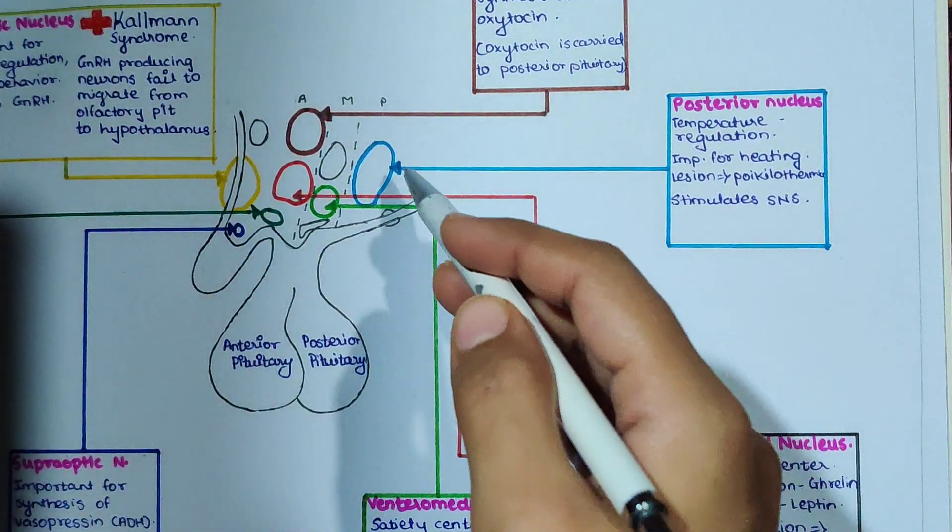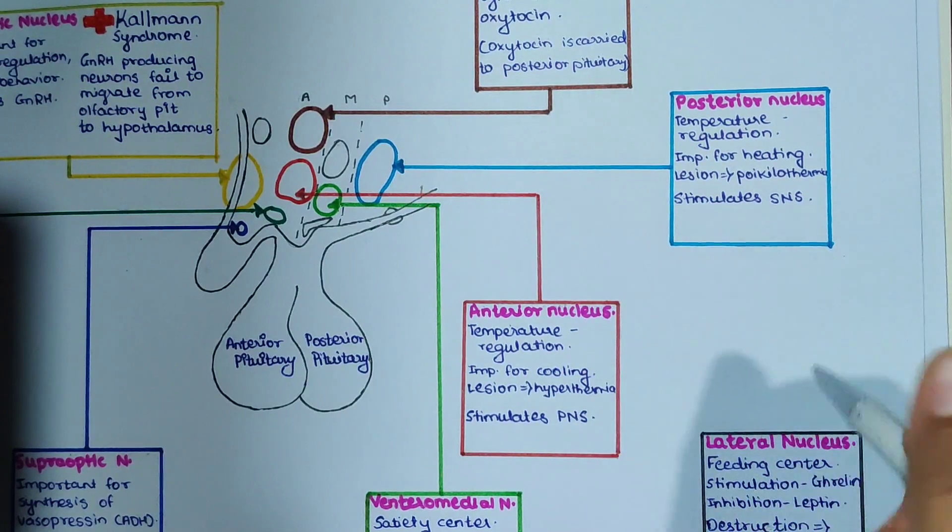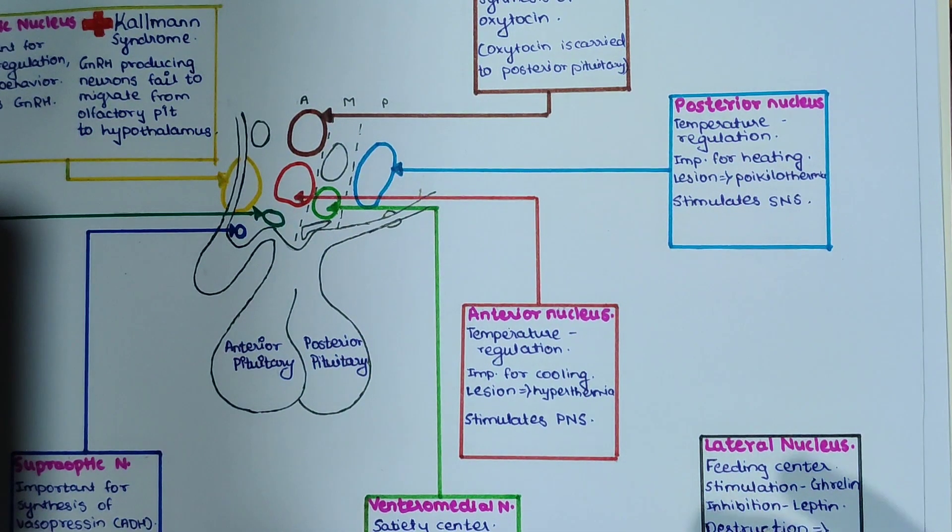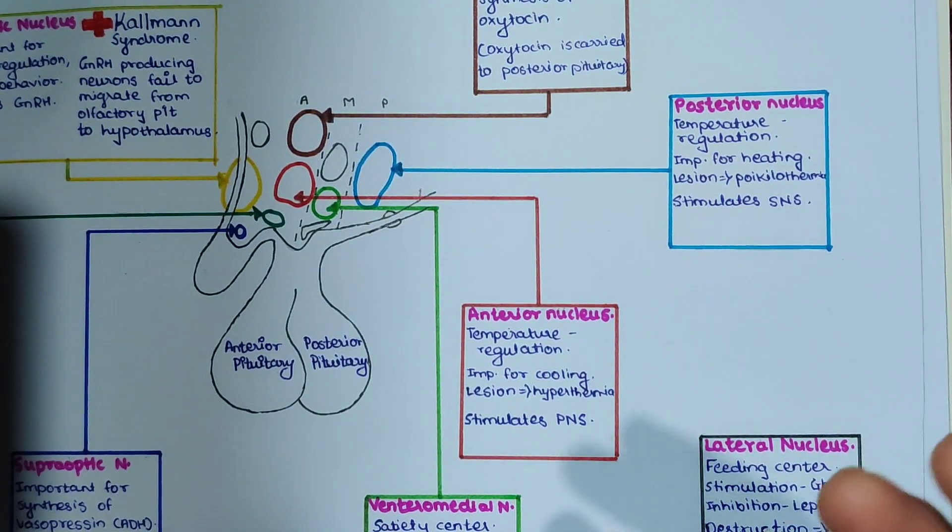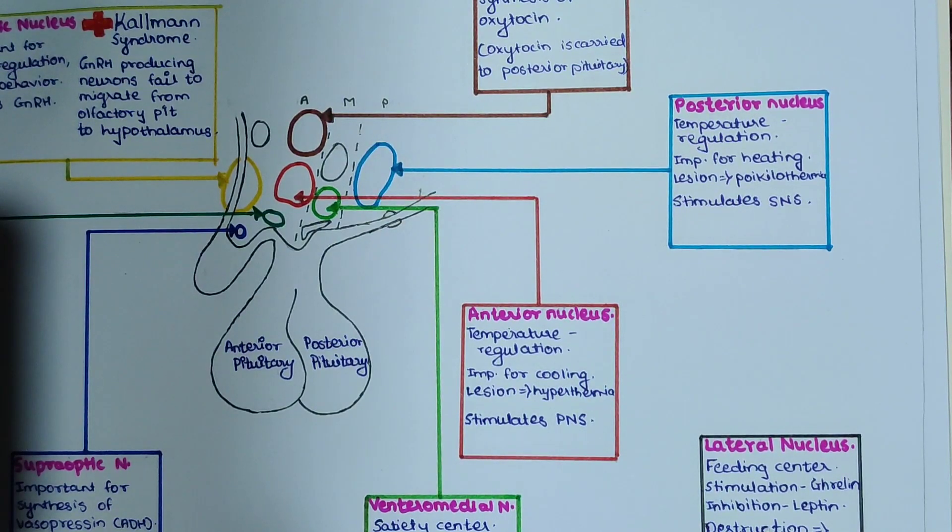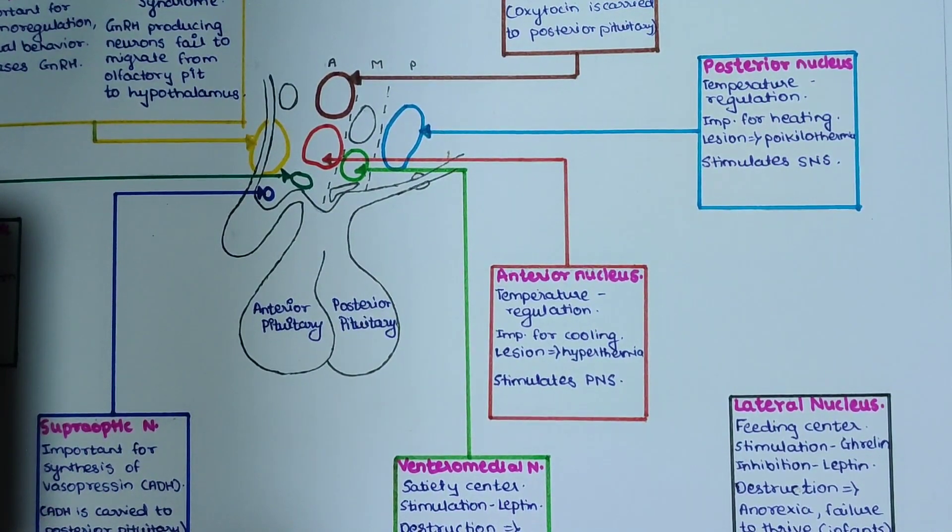Highlighted in light blue is our posterior nucleus. Posterior nucleus is important for temperature regulation, specifically for heating. If there is damage or lesion in posterior nucleus, it will cause poikilothermia, a condition when our body's temperature varies according to the environment temperature, which is not a normal mechanism in humans. Posterior nucleus can also stimulate the sympathetic nervous system.